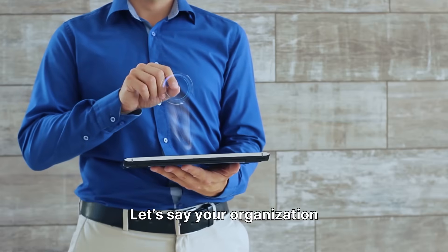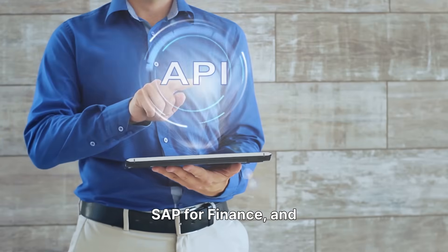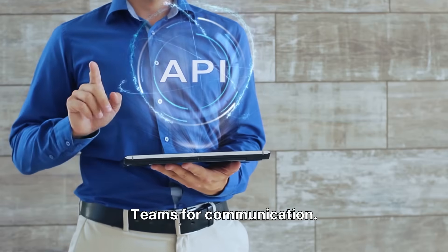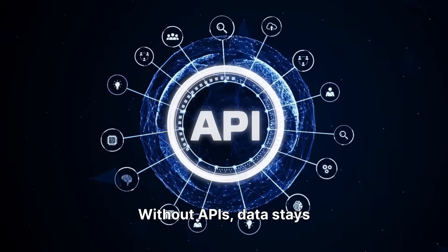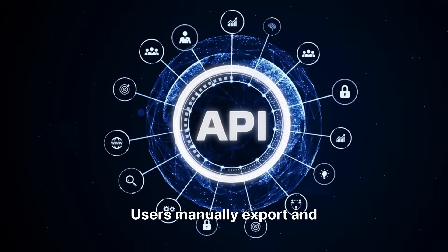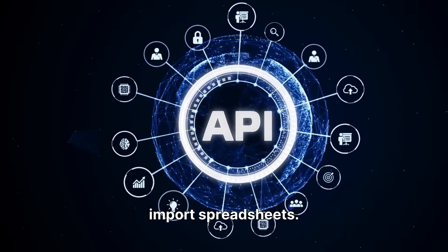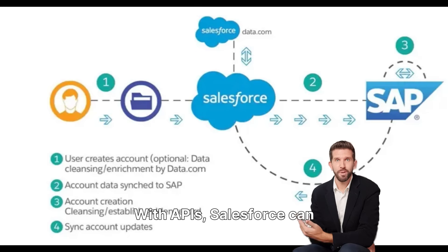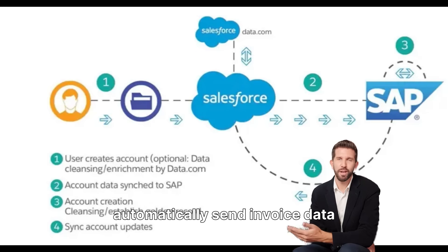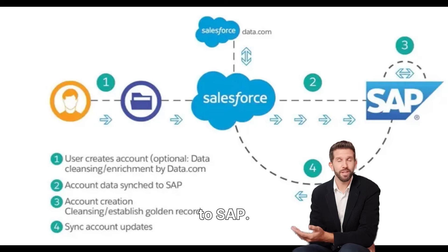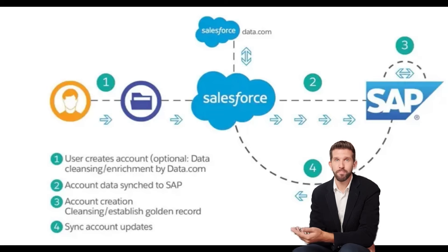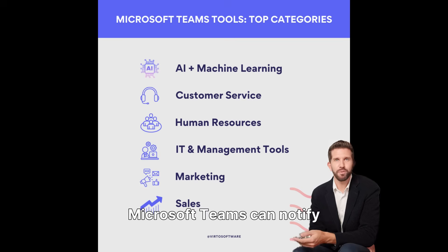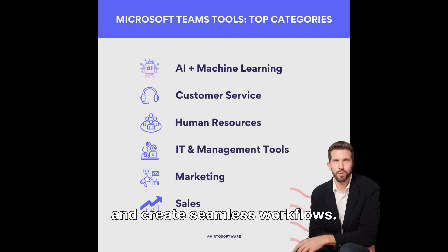Let's say your organization uses Salesforce for CRM, SAP for finance, and Teams for communication. Without APIs, data stays in silos. Users manually export and import spreadsheets. Errors spread, and work slows down. With APIs, Salesforce can automatically send invoice data to SAP. SAP can update payment status back to Salesforce. Microsoft Teams can notify finance in real-time. APIs remove manual work and create seamless workflows.